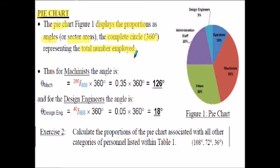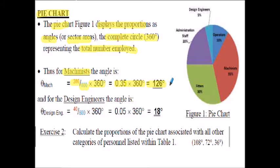If we take the category of machinists, we saw there were 280 machinists out of the 800 people employed at the company. This time we do not multiply that ratio by 100 as we did with percentages - we multiply it by 360 degrees, because there are 360 degrees in the circle. So 280 divided by 800 gives us 0.35, and 0.35 times 360 degrees is 126 degrees, which relates to the machinists sector.